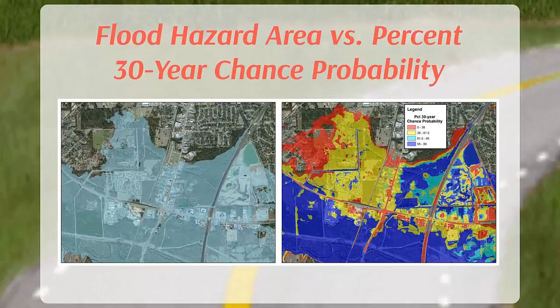The last grid we will examine is the percent 30-year chance grid. This raster dataset represents the probability of flooding at least once within a 30-year period for all locations within the extent of the 0.2% annual chance floodplain. 30 years is equivalent to the timeframe of a standard home mortgage. By putting the concept of flood risk in a more relatable timeframe, this grid is very useful in dispelling misconceptions that there is little chance of being flooded over the life of a mortgage.